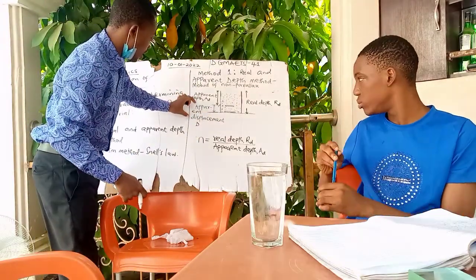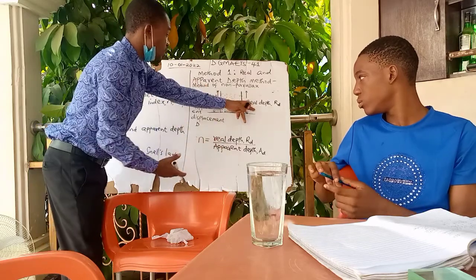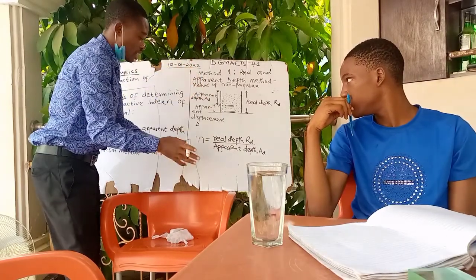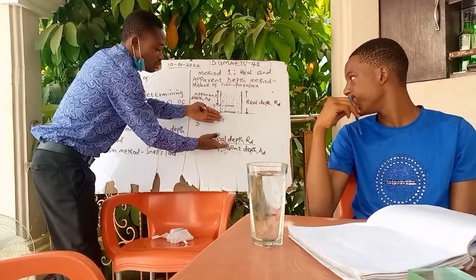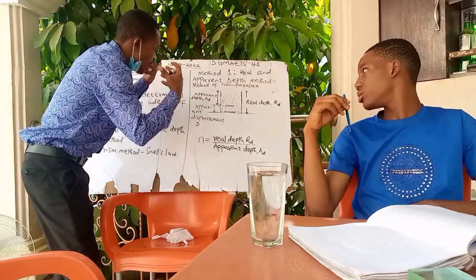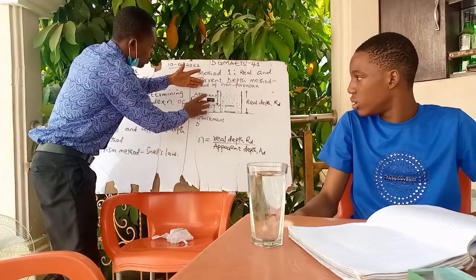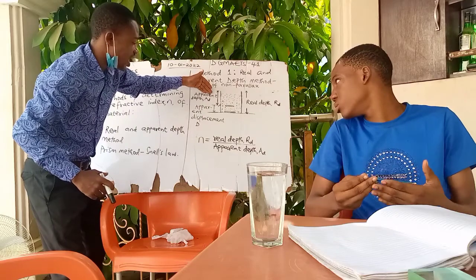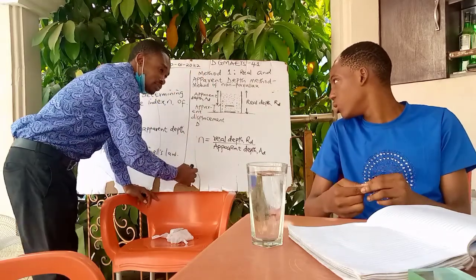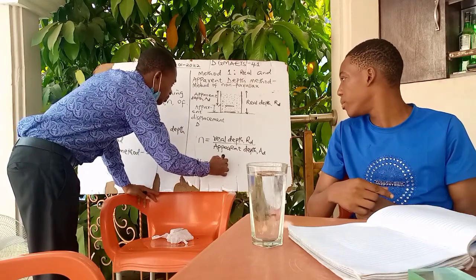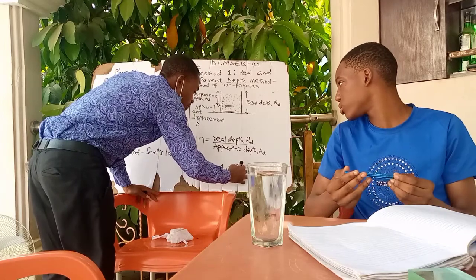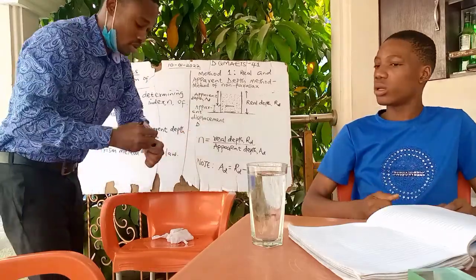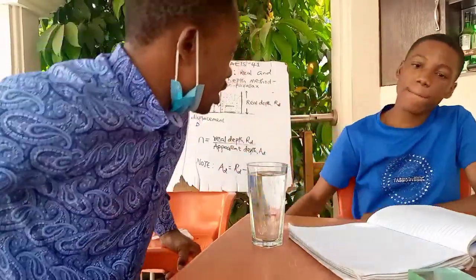Let me ask you a question. Look at this apparent displacement — because in the formula for refractive index, what we need is the real depth and the apparent depth. But there are some cases you might not be given the apparent depth. Maybe in a theoretical case you are given the apparent displacement. You don't need apparent displacement in this formula, so if apparent displacement and real depth are given, you need to get apparent depth. So note: apparent depth, AD, is equal to real depth minus apparent displacement. That is the reason why we really have to get this apparent displacement.